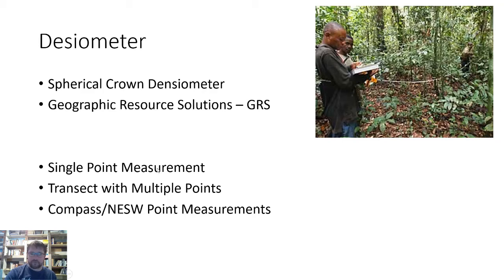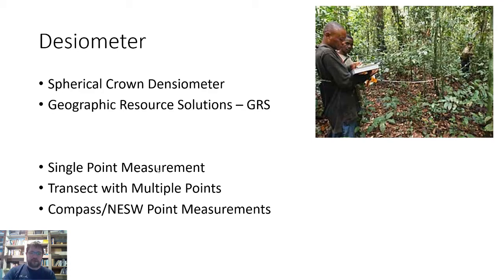A single point measurement means you're interested in just a single tree and the canopy coming off that single tree. Or you might have random points within the forest — all randomized — and you just take a measurement from that single random point using GPS coordinates.